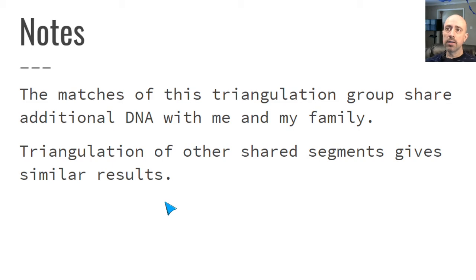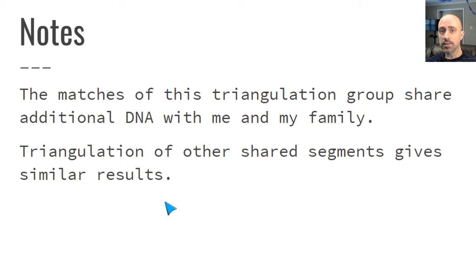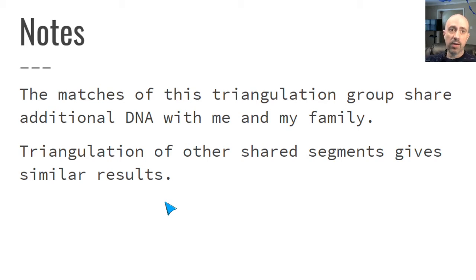Some notes on this situation: the matches in this triangulation group share additional DNA with my family, so we're not just relying on this one segment on chromosome one — there are other segments involved. We don't have time to get into all of the segments of all the Spivey relatives I have, but we can learn a lot from this one segment. Just keep in mind it's one piece of a bigger puzzle. And if we triangulate other segments shared by various Spivey relatives, we get similar results.